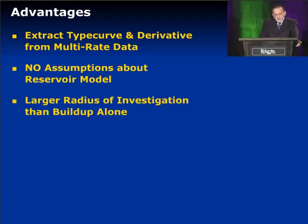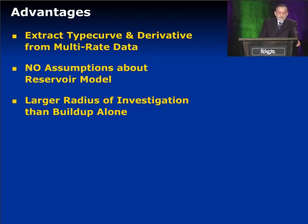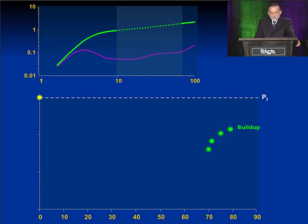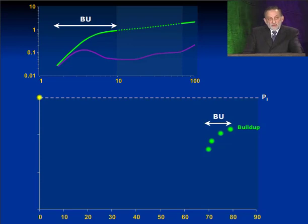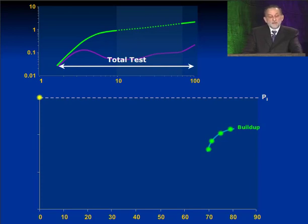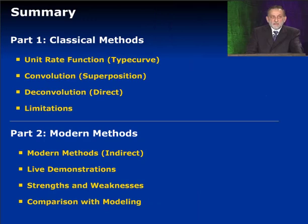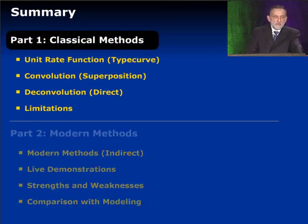One great advantage of the deconvolution process, as opposed to modeling, is we don't have to assume the reservoir model. I can deconvolve the data without knowing anything about the reservoir model — that's not possible in modeling, where you must pre-select a reservoir model before doing your modeling and convolution. An additional advantage is that in normal buildup testing, we usually investigate only the duration of the buildup. If we use deconvolution and use all the rate history associated with it, we actually deconvolve and get the unit rate type curve for a longer period of time, so our radius of investigation is increased. In conclusion, the classical methods have been known for many years but have not been used successfully because of sensitivity to data quality.